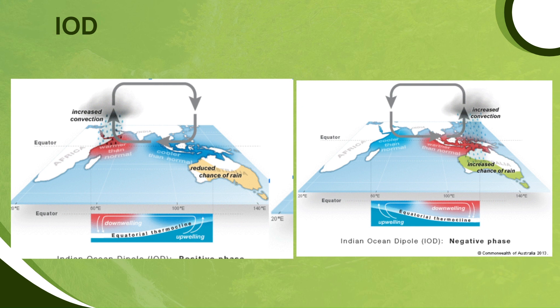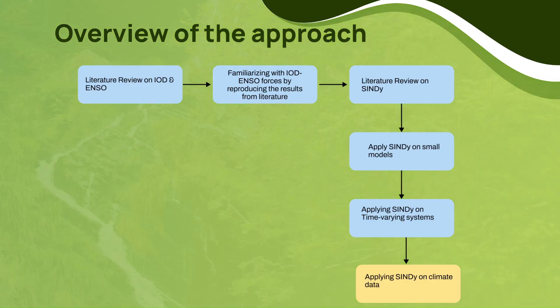Similarly, there is an equivalent subsystem present in the Indian Ocean. We'll be looking to understand the interactions between these two systems. The broad approach involves first understanding the Indian Ocean Dipole and ENSO, then modeling them using a stochastic differential equation, and then understanding a sparse regression method.